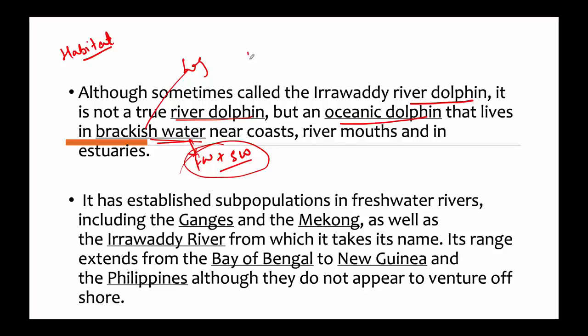In terms of countries where they are found: in Bangladesh, they are found in coastal waters of the Bay of Bengal and even in the brackish Sundarbans mangrove forest. In India, their presence is recorded in the brackish water of Chilika Lake and also in Sundarbans National Park. They are also found in Laos and Cambodia, in a 190-kilometer freshwater stretch of the Mekong River.